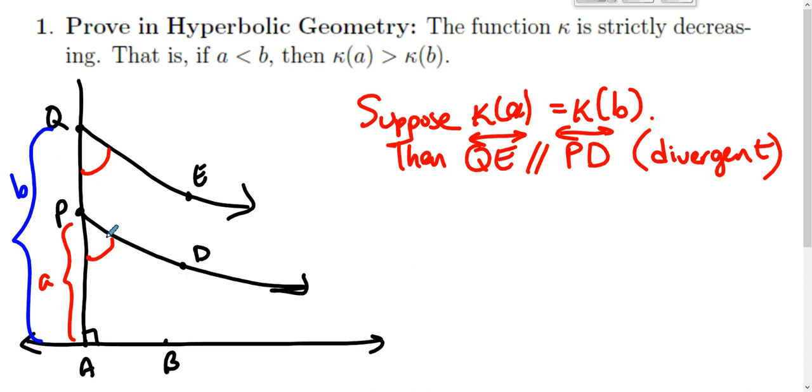Because they are divergent parallels, there exists a point R on ray QE so that the distance from R to ray PD, whatever this distance is, it's greater than b. Divergent parallels get further and further and further apart. So there's some point R on ray QE so that if we drop the perpendicular to ray PD intersecting at point F, the distance RF is greater than b.